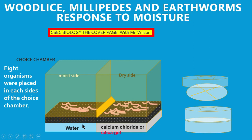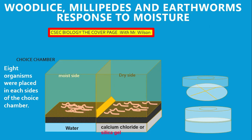For this experiment we're using the earthworm, but the response of the earthworm is going to be similar to that of the wood lice and the millipede. We started the experiment with about eight earthworms — you could count and you might find nine — so make sure that you are doing the counting so that your observation is accurate.